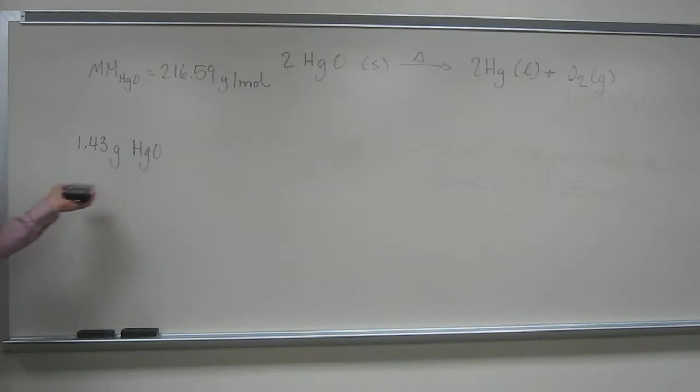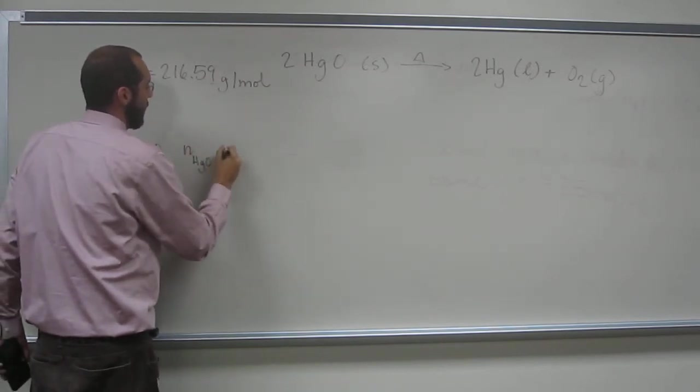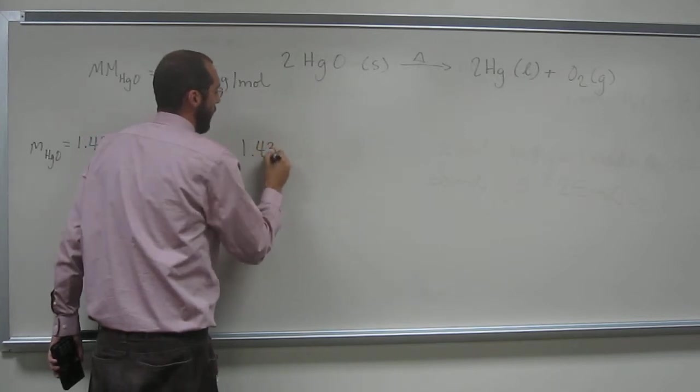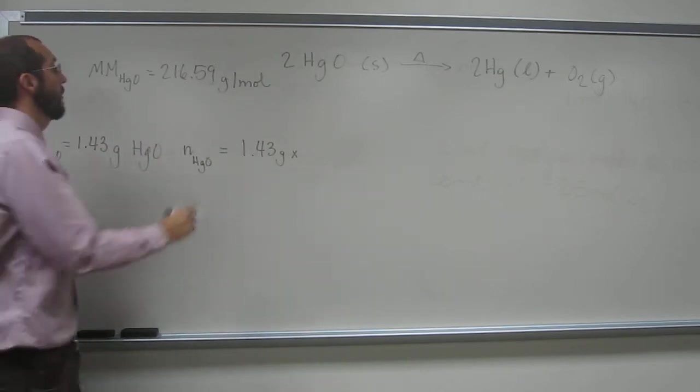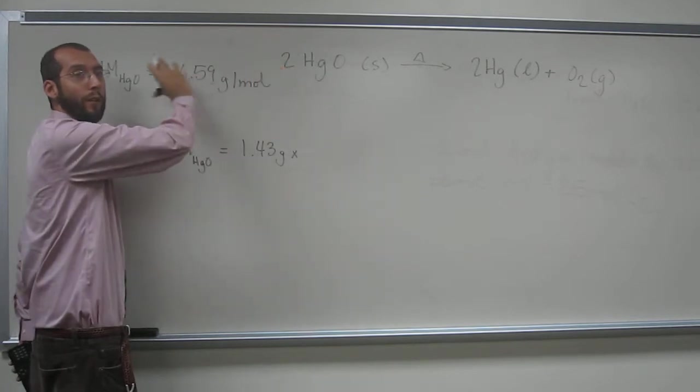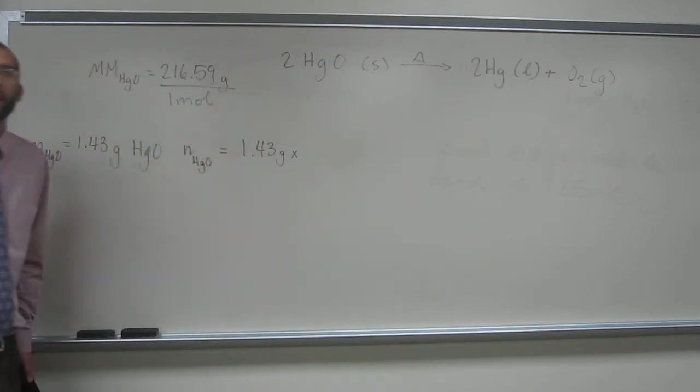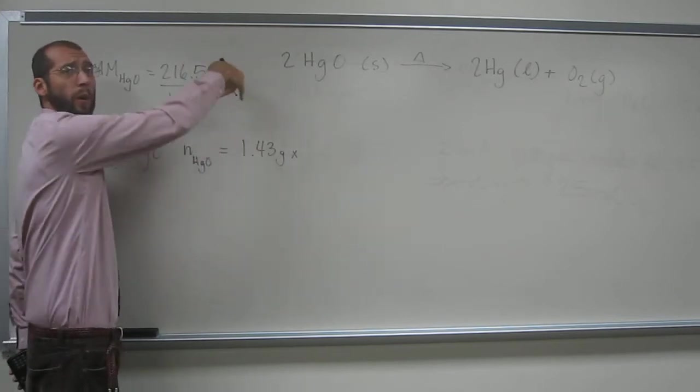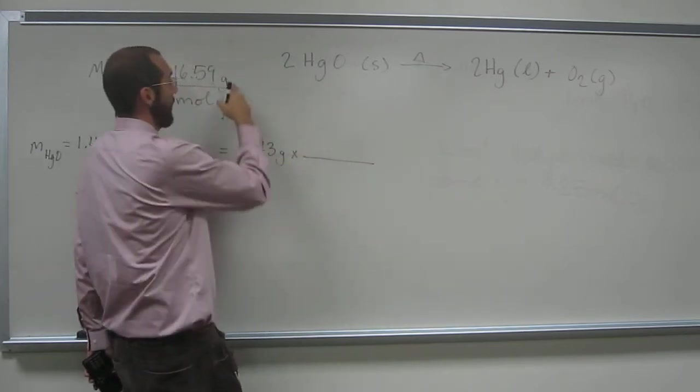So with this information here, the mass of mercury two oxide, we should be able to get the number of moles of it. So the number of moles of mercury two oxide is going to be the mass times the molar mass of mercury two oxide. Remember I said this is the text message way of writing it. So if we're going to really make it functional, we're going to write it out like that. So let's flip it upside down and use it properly so we can get those grams out of the way.